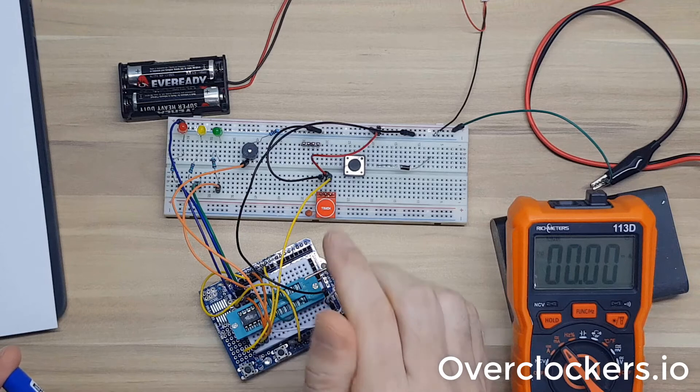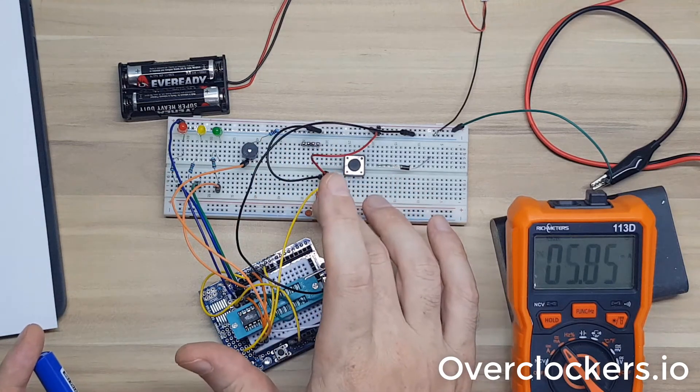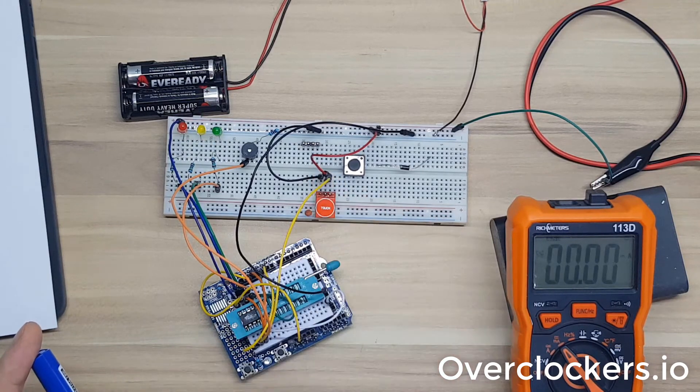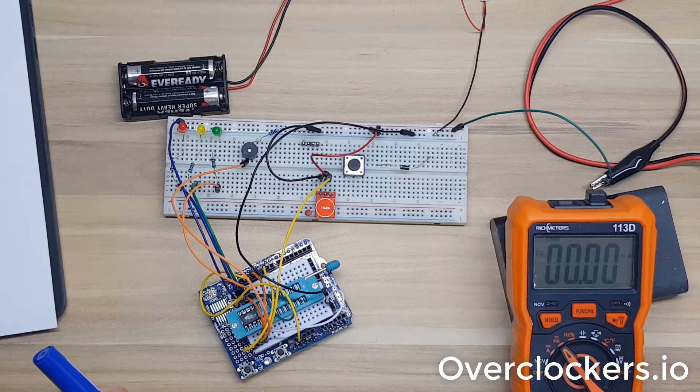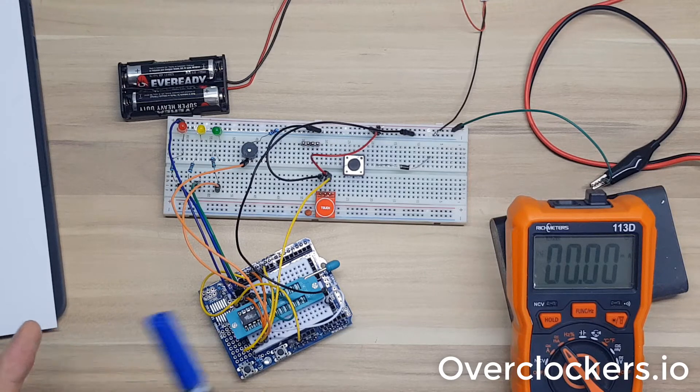I'm having a problem where the buzzer occasionally plays on high, and if I unlatch it or do my capacitive touch switch where I turn it off, it seems to continue to keep that high signal on. I haven't been able to debug that yet, but I wanted to show you what I've done.